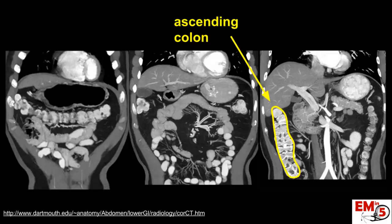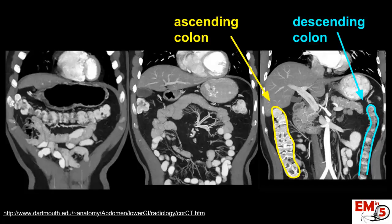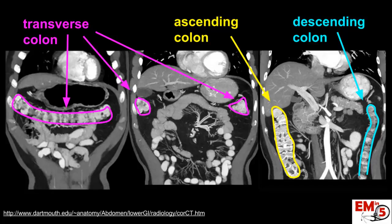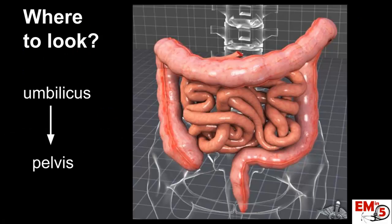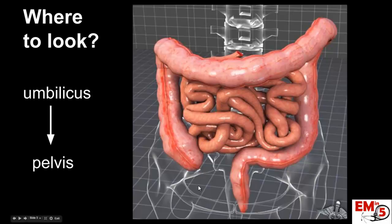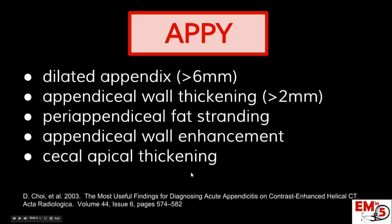Here we have the ascending colon. Let's identify the descending colon over here on the left, and then we have the transverse colon. So now we've found the colon, and specifically the ascending colon and the cecum. We're going to be looking somewhere between the umbilicus and the pelvis, or the cecum, where we should find the appendix — that's where you'll be scrolling through.